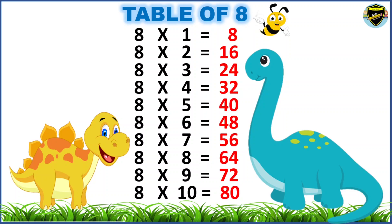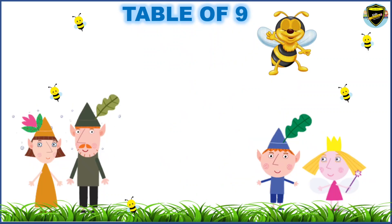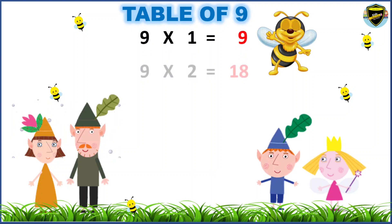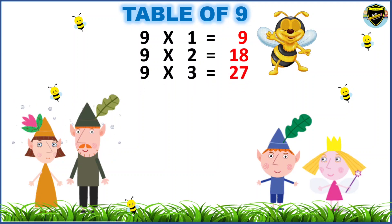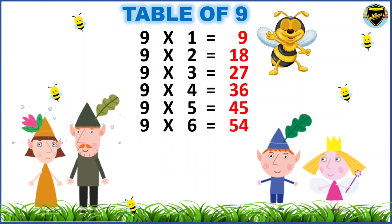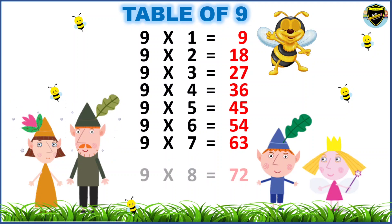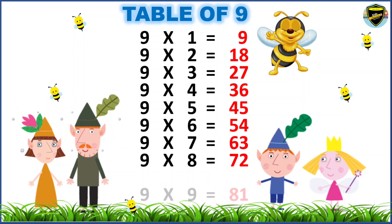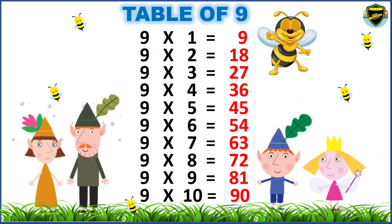Now, let's learn the table of 9. 9 1s are 9. 9 2s are 18. 9 3s are 27. 9 4s are 36. 9 5s are 45. 9 6s are 54. 9 7s are 63. 9 8s are 72. 9 9s are 81. 9 10s are 90.